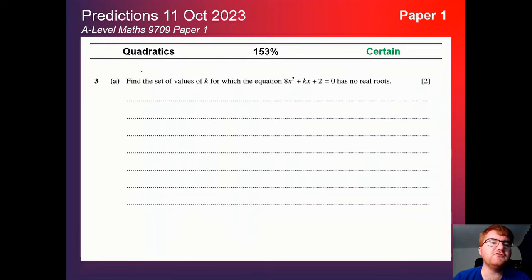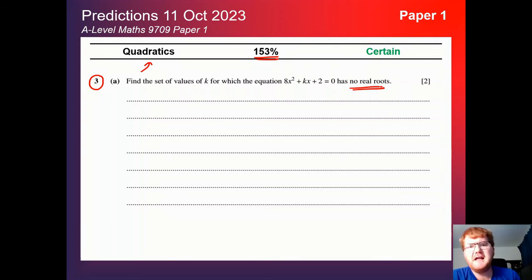And on to quadratics, there's not a surprise here, at a whopping 153%, so it comes up a lot on this paper. Again, it can vary in terms of what they test you on. This is a very standard question here, where they need to find no real roots or a repeated root or two real roots. That use of the discriminant is a very, very important topic. Again, if you want to review your work on quadratics, check out the video above.